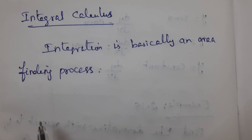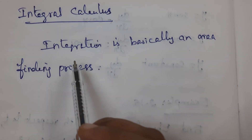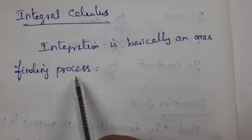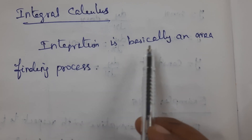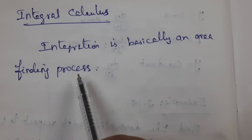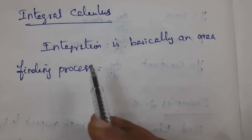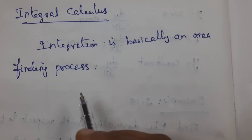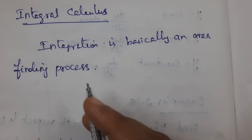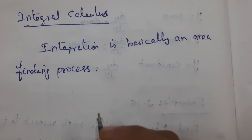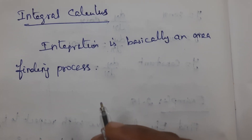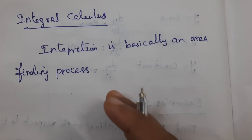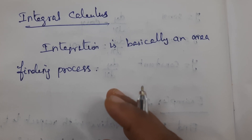The next one is integral calculus. What is meant by integration? Integration is basically an area-finding process. You have learned many formulas for area of different shapes — area of square, area of rectangle, etc. For certain shapes we can find the area directly, but for irregular shapes we cannot find the area directly.